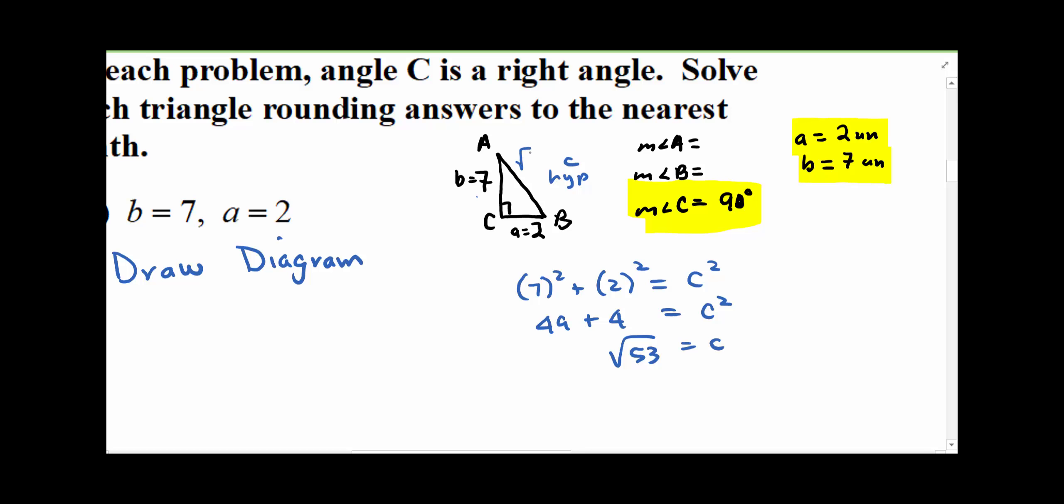And then when you take the square root of 53, so the exact answer is the square root of 53. When you plug it into your calculator, you get about 7.3 units.